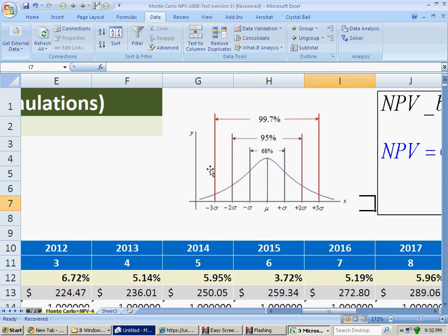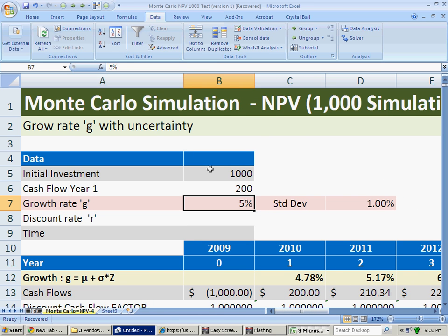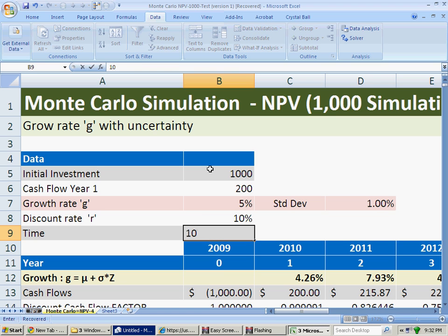So I don't have a constant growth, I have a growth with 5% as a mean and 1% as a standard deviation. The discount rate I am going to consider for this example is 10% and the time is going to be 10 years.